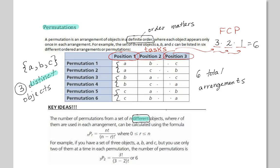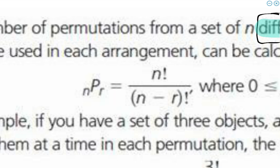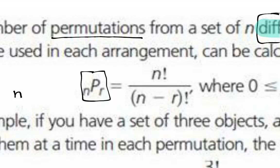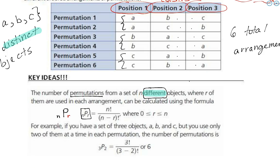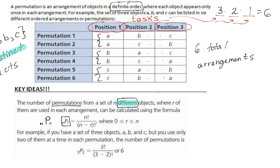Today's lesson gives us another way of solving these problems using the notation NPR. N is in the subscript, then a large capital P, then R in the subscript on the next spot. The R represents the slots to be filled — the tasks, the positions. That's the R value in this NPR notation.